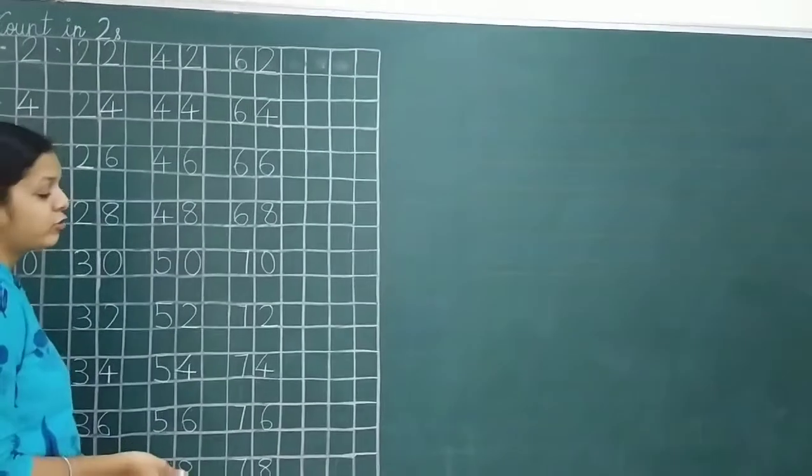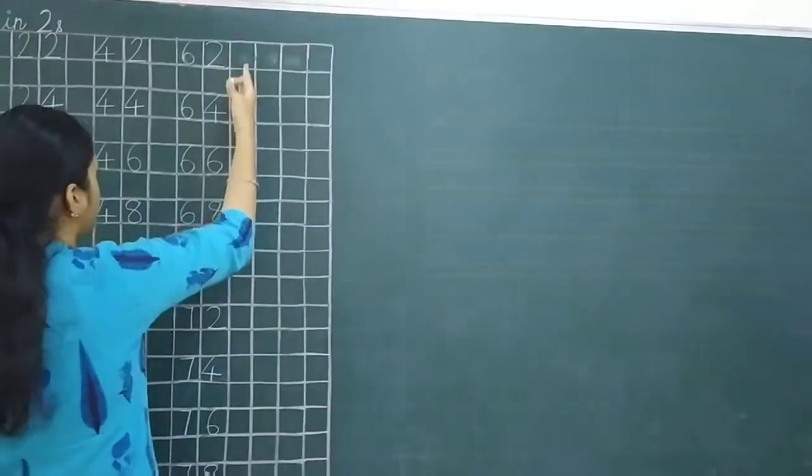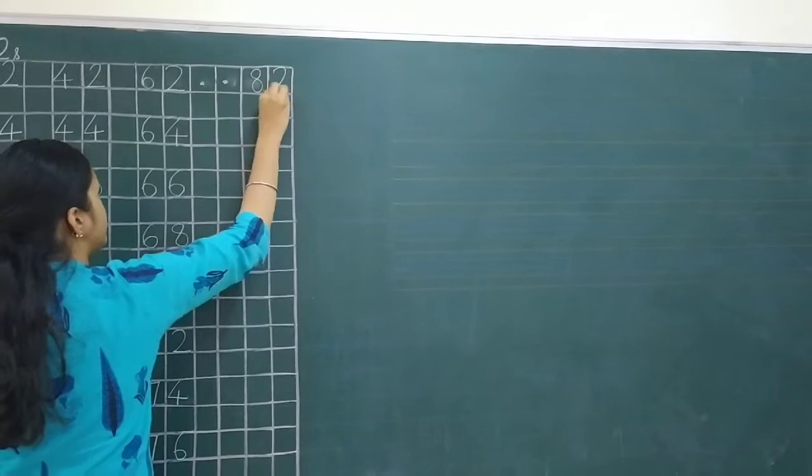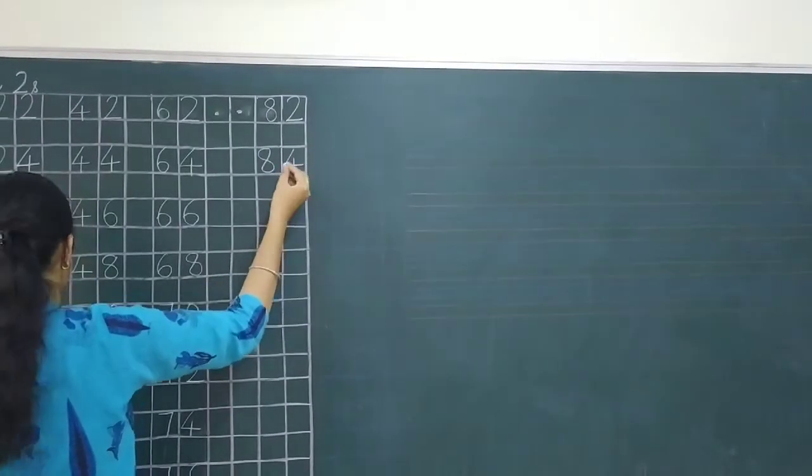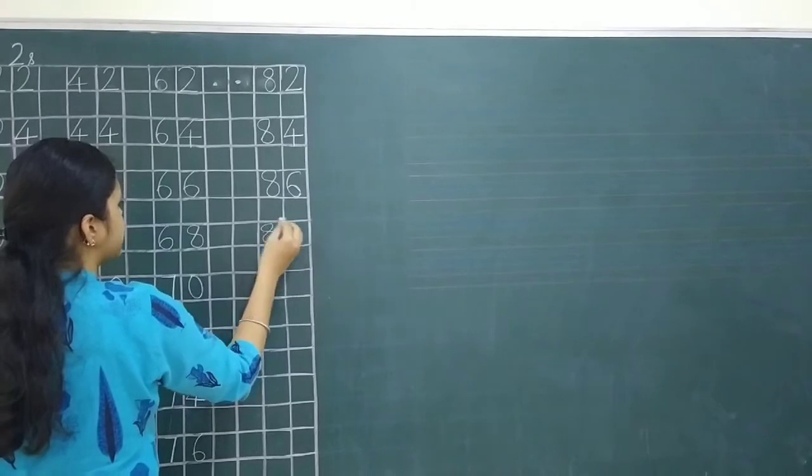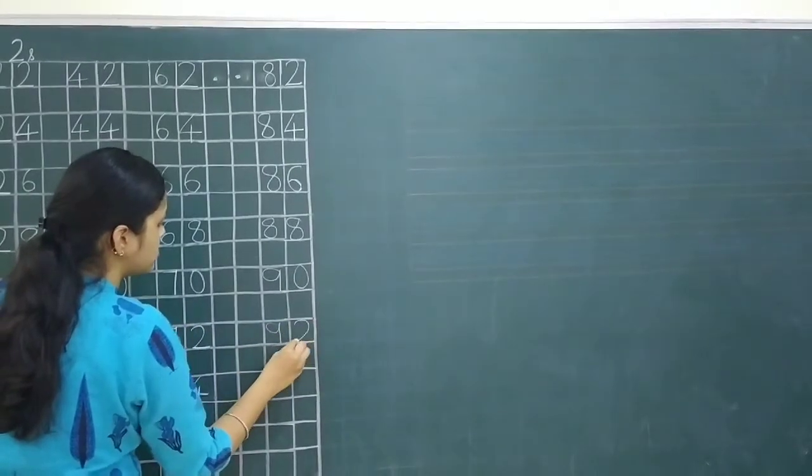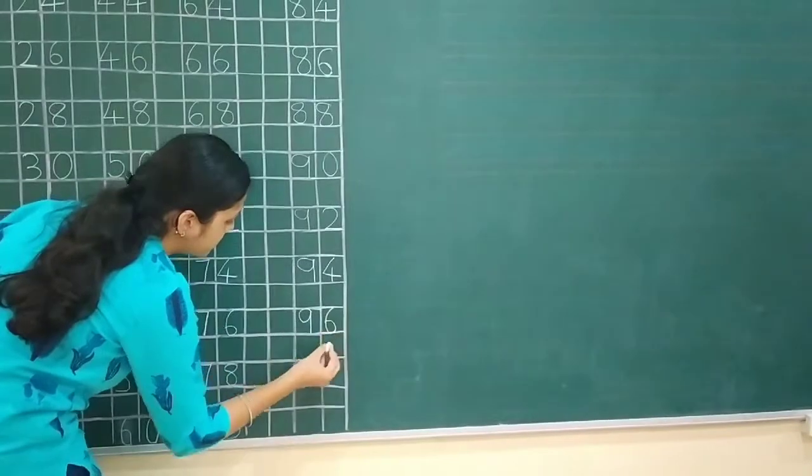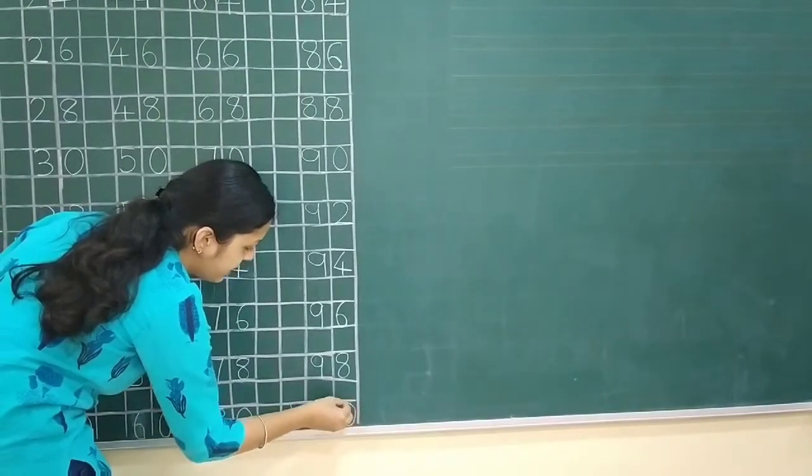Now, next. We are going to have 3 letter digits, 100. So, we will leave 2 space. 2 spaces. Okay. 2 line space. Yes. 82. After 80, 82. 81, we are not going to write. Next. 84. 86. 88. 90. 92. 94. 96. 98. And we have 3 digit numbers. 1, 0, 0. 100. Because of this, we have left 2 spaces.